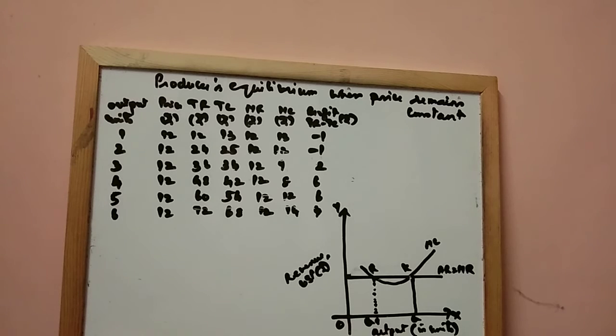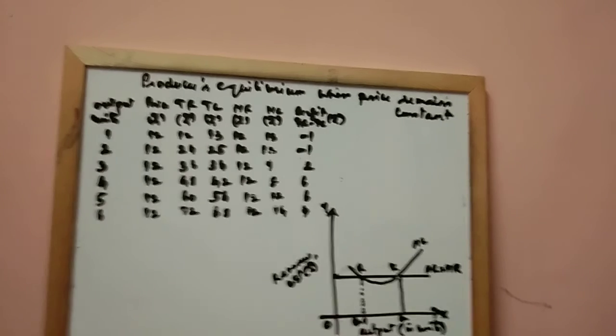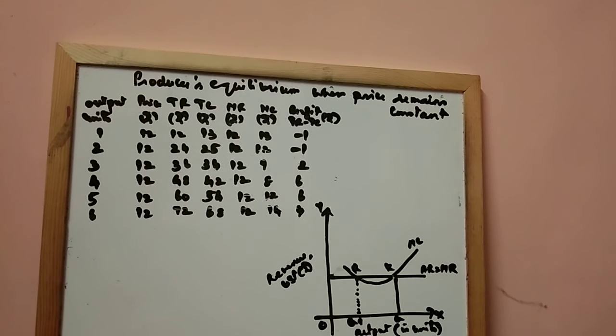What are the two conditions? MC is equal to MR. Second condition, MC is greater than MR after MC becomes equal to MR output level. So here you find the equilibrium at R2.